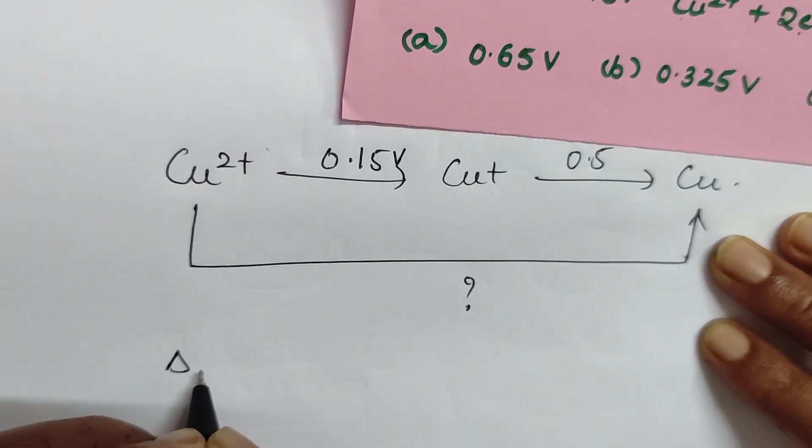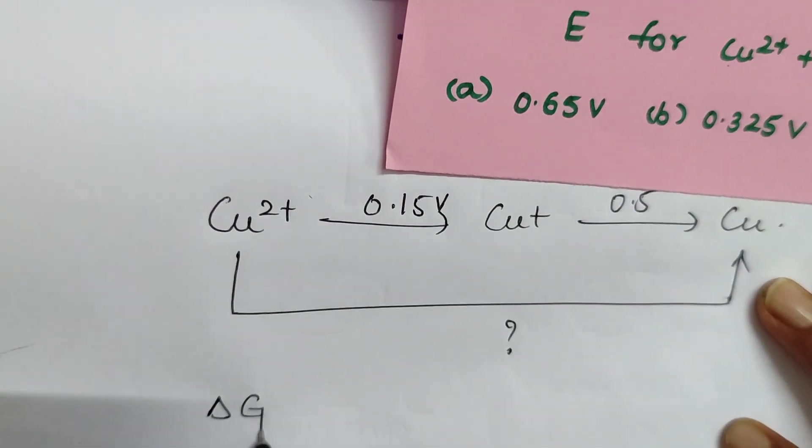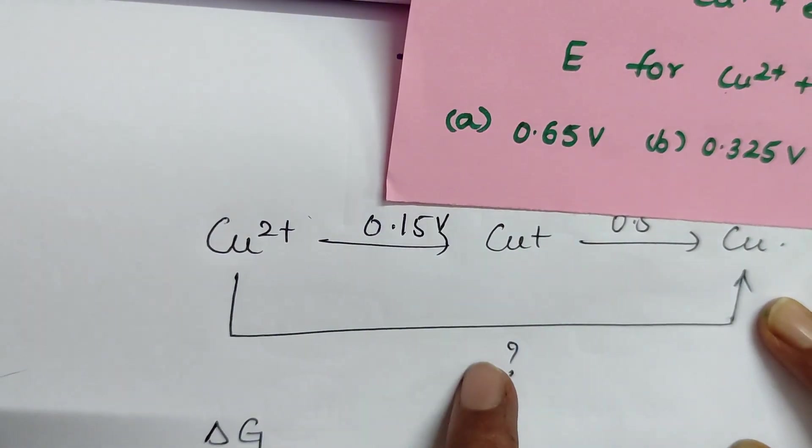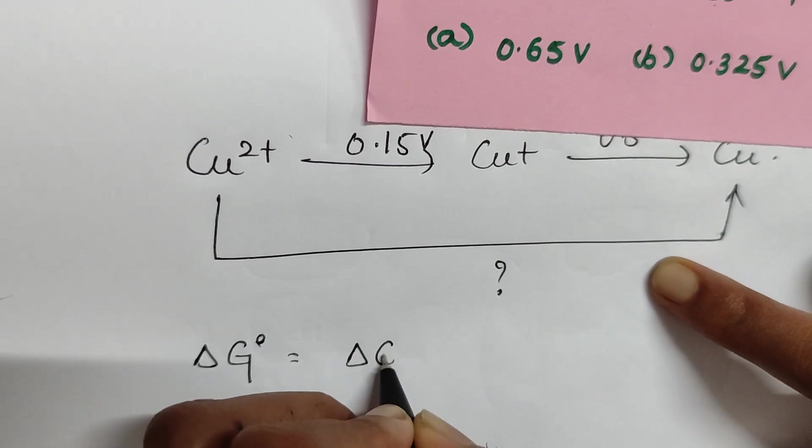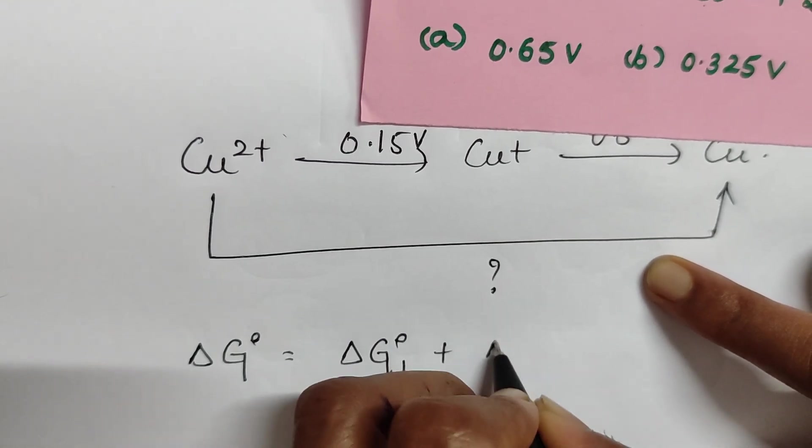As I told you in the previous video, E° value is not an additive property. You can't add these two directly to get this E° value. What you need to do is ΔG° equals ΔG°₁ plus ΔG°₂ because Gibbs energy change is an additive property.